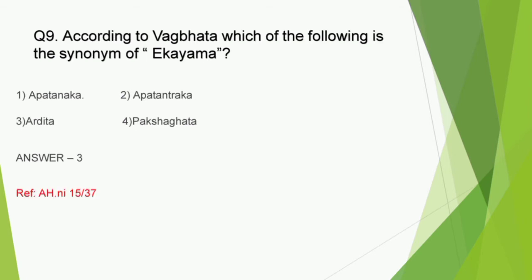Question number 9: According to Vagbhata, which of the following is the synonym of Ekayama - Apatanaka, Apatantraka, Ardhita, or Pakshaghata? The correct answer is option 3, Ardhita. Similarly, the synonym Ekanga Roga is mentioned for Pakshaghata. The diseases along with their synonyms and clinical features mentioned in Ashtanga Hridaya Vatavyadhi Nidana have been frequently asked, so give them due importance.